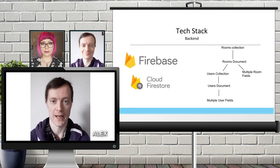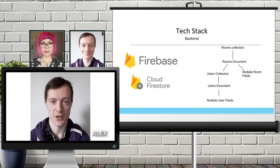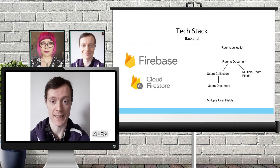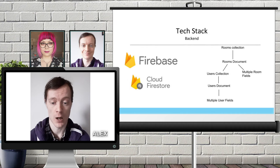We briefly toyed with the idea of building the backend from scratch using an Express server and WebSockets to serve up data from a relational database. However during the initial spiking phase we discovered that using Firebase would give us access to a real-time database through their cloud Firestore, also providing us with methods that could be fired when the database was updated. This covered everything we needed for the backend all in one place, allowing us to focus more on the logic of the quiz and the user experience.